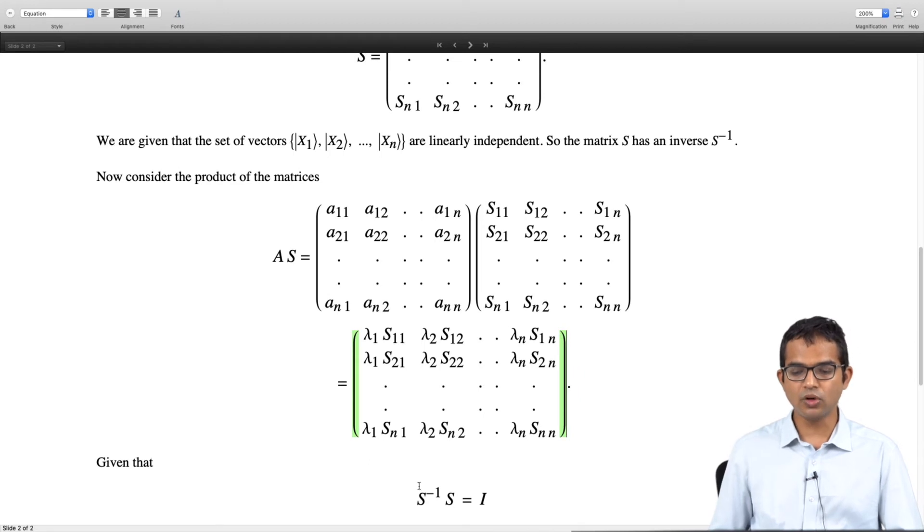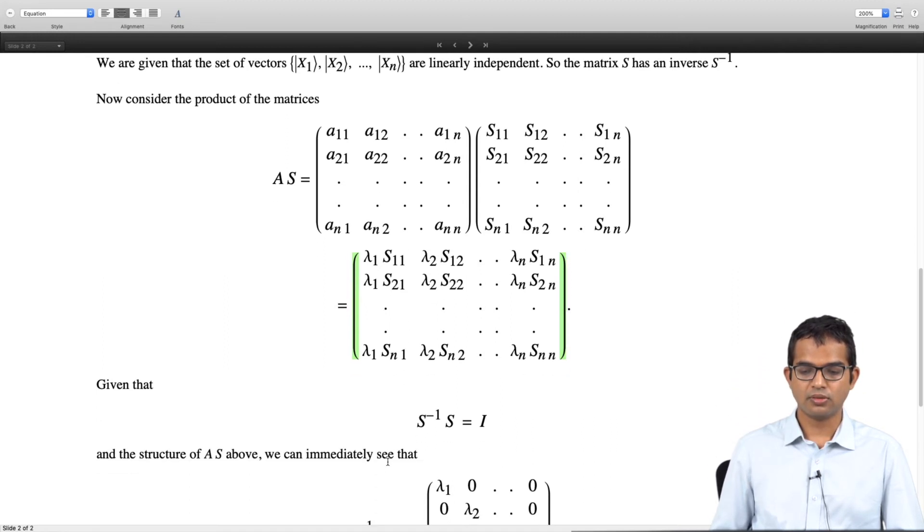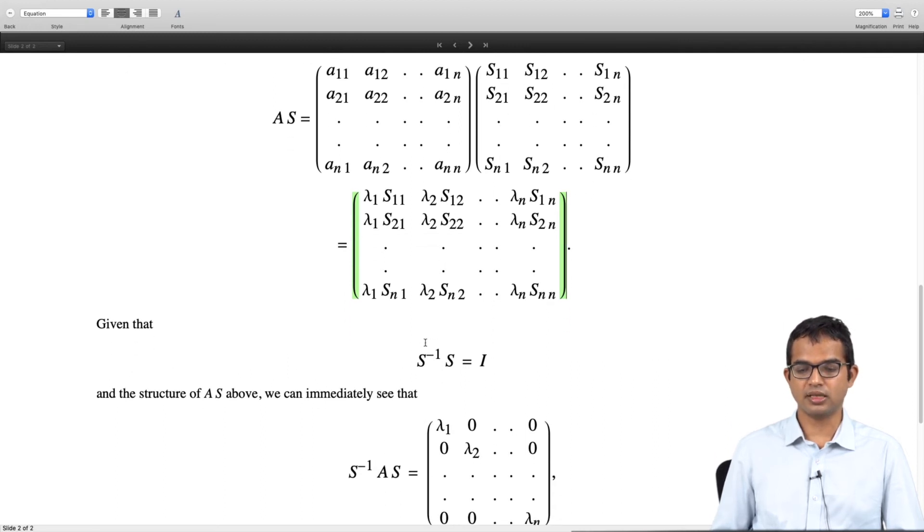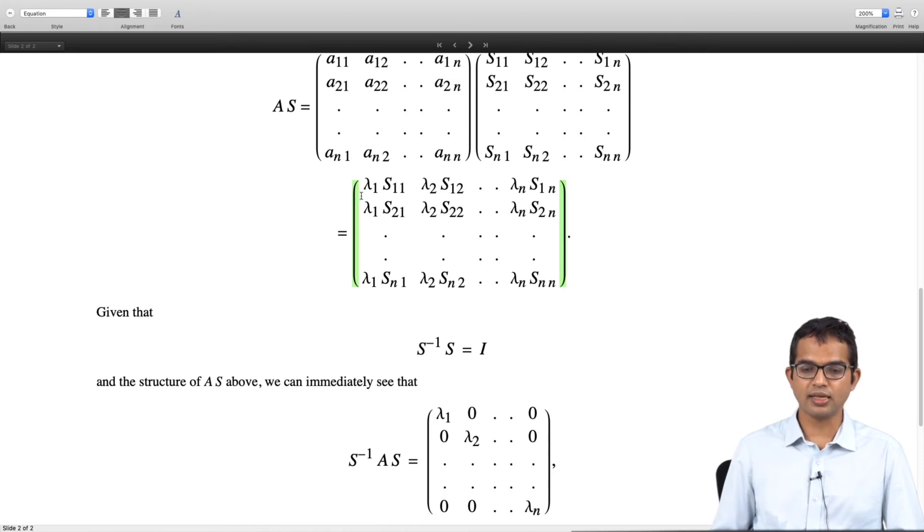So, AS is something that I can immediately work out because of what I have chosen S to be. Now we also know that S inverse exists so S inverse times S is equal to I. So let us sandwich A between S inverse and S. Let us work out S inverse A S. S inverse S is equal to I so S inverse A S, we see that when we do AS you basically get S but every column has an extra lambda there right.